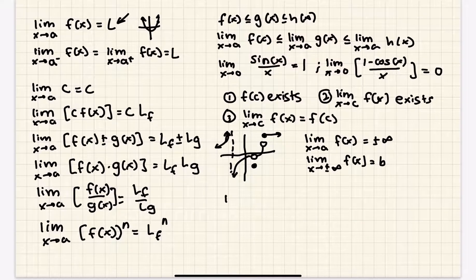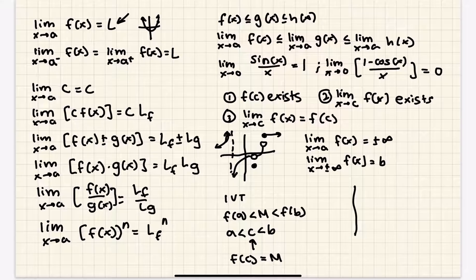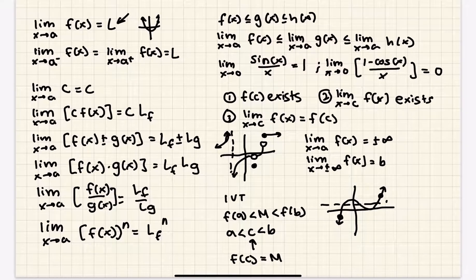Finally, the Intermediate Value Theorem (IVT) says that if f(x) is continuous on a closed interval [a, b], such that f(a) < m < f(b), there exists a value c with a < c < b such that f(c) = m. Graphically: for any value m between f(a) and f(b), there's at least one x value where the function equals m — but only if the function is continuous on the closed interval. Some FRQs and MCQ questions ask about this, so keep it in mind.